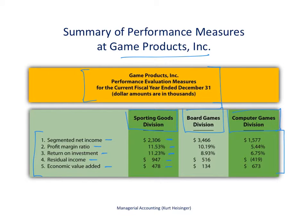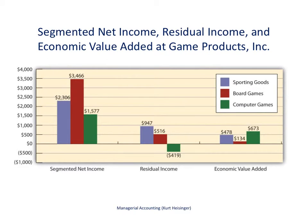The next two slides show graphs summarizing this information. The first graph shows the measures stated in dollars, and the next graph shows the measures stated in percentage form. Sporting goods had segmented net income of $2,306,000; board games is next at $3,466,000; and computer games is next at $1,577,000. Each of these bars represents a division within the company.